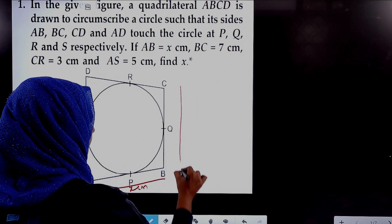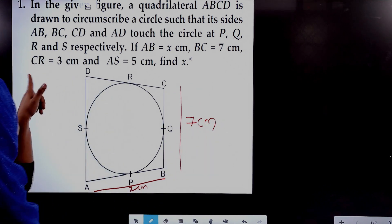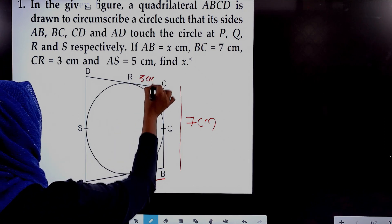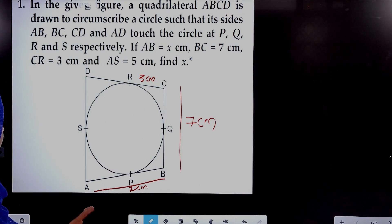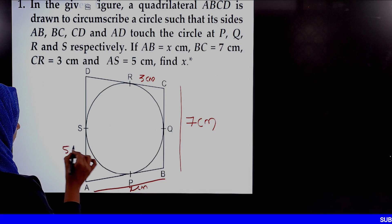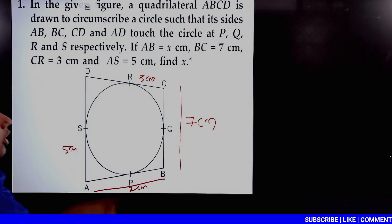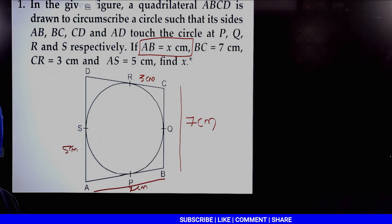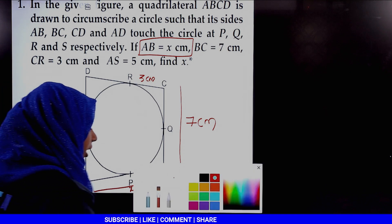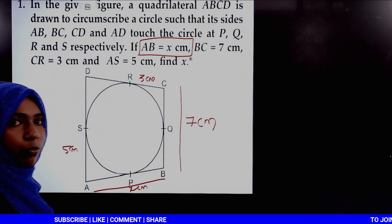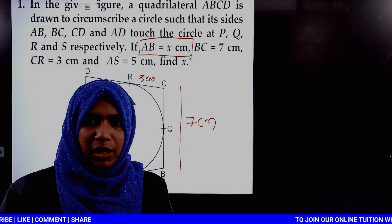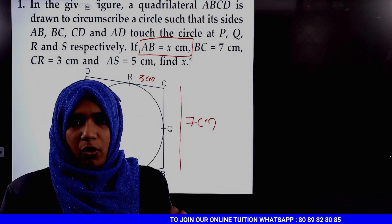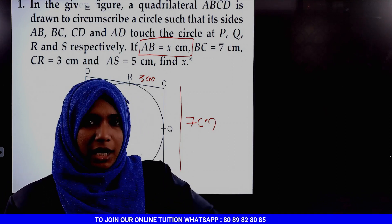BC is equal to 7 cm, CR is equal to 3 cm, AS is equal to 5 cm. We need to find the value of X, where X equals AB, the side length. We will use the important theorems we are ending in the circle chapter — NCERT textbook theorems regarding circles and tangents.